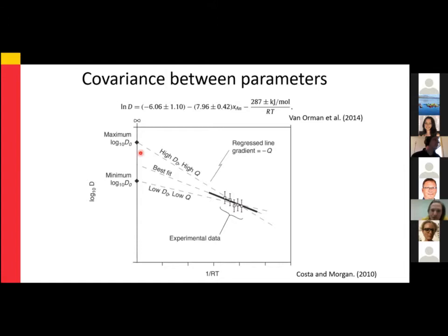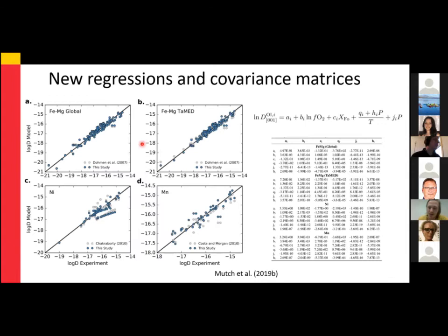Here's an Arrhenius plot. When we're fitting diffusion experiments to get the slope — which is the activation energy — and the intercept — which is D-naught — these parameters are actually correlated. In order to have a steeper slope, you need a higher intercept. This underlying covariance can be really important when considering uncertainty propagation. We've made new multiple linear regressions through the olivine diffusion datasets compiled by Sumit and Ralph Dohmen. This allows us to create covariance matrices to assess correlation between all parameters in the empirical fits.